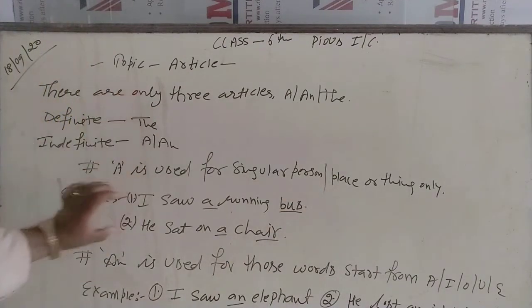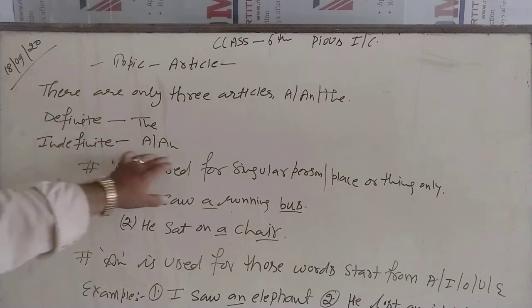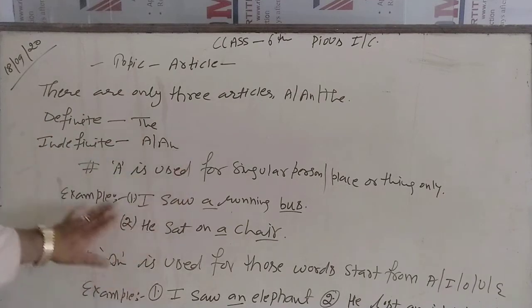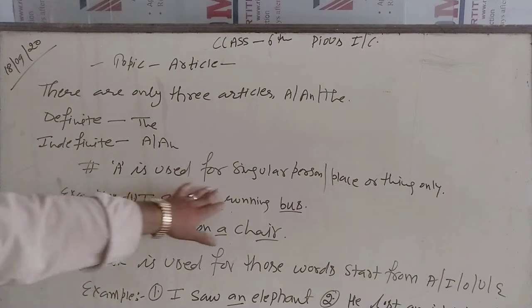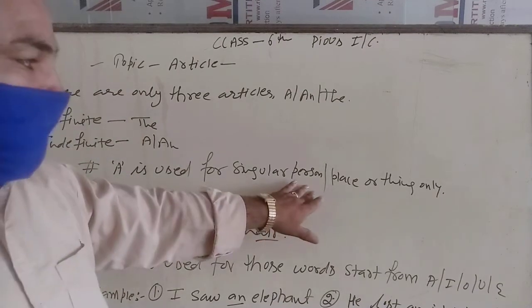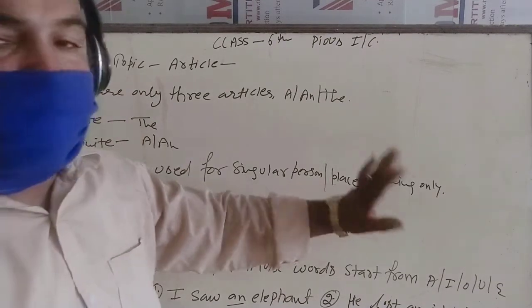Definite article is The. Indefinite is An. A is used for singular person, place or thing.